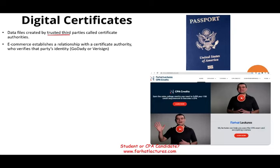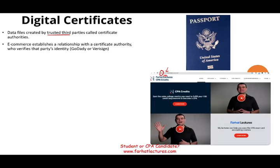E-commerce sites like Farhat Lectures establish a relationship with a certificate authority who verifies their identity. For example, I use a service called GoDaddy, which gives me a digital certificate. You can tell if a website has one by looking at the address — if it shows HTTPS with an 'S' and a lock icon, the website is secured. GoDaddy creates a coded electronic certificate containing my name, public key, serial number, and expiration date — similar to how you renew a passport.